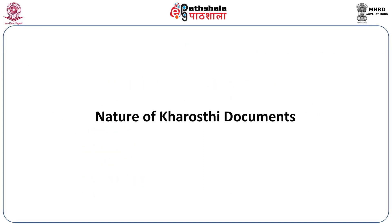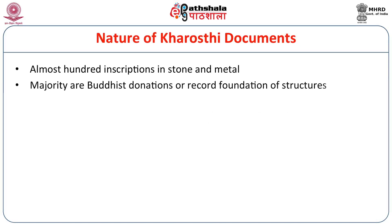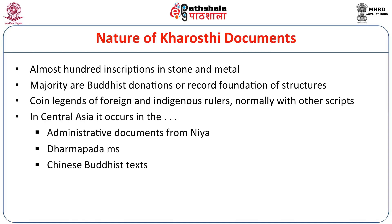The nature of Kharosthi documents: the script is found on hundreds of inscriptions in stone and metal, with fresh inscriptions still being discovered. The majority of Kharosthi inscriptions record donations by Buddhists or the foundation of structures like monasteries or cisterns. Coin legends of foreign and indigenous rulers also contain Kharosthi, normally alongside other scripts like Brahmi or Greek. In Central Asia, Kharosthi occurs in administrative documents, Buddhist Dhammapada manuscripts, and Chinese Buddhist texts.